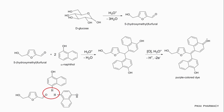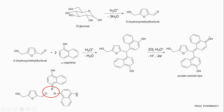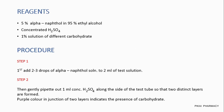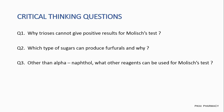The reaction between 5-hydroxymethylfurfural and the two alpha-naphthol molecules is a dehydration reaction. The two hydrogen atoms in the para position react with the oxygen atom to release water (H₂O), forming a condensed product that is purple in color. Here are the reagents and the procedure.